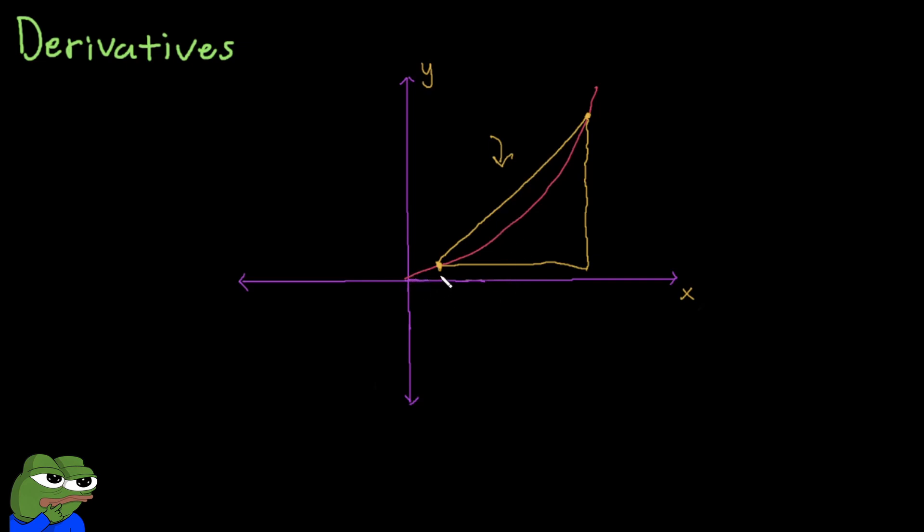What it means by average rate of change is it actually adds up all of these individual rates of change inside this area. At this point, there's a gradual slope here. At this point, there's also a slope here. At this point, there's a slope here. And at this point, there's a steep slope here. So it adds up all of these infinitely small slopes within this region, then averages it to give you this average slope.